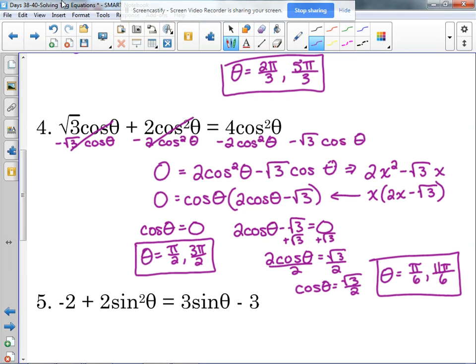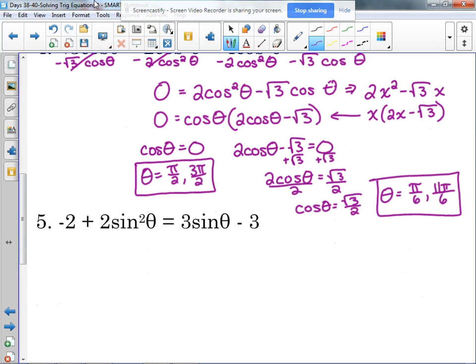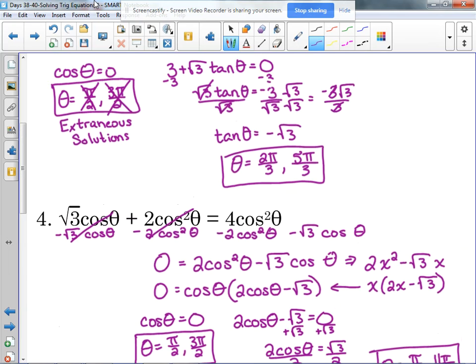And again, you can check it. Make sure you put that extra set of parentheses around the cosine since it's cosine squared. I'm not going to take the time to do that. So we've looked at two different types of factorings so far.